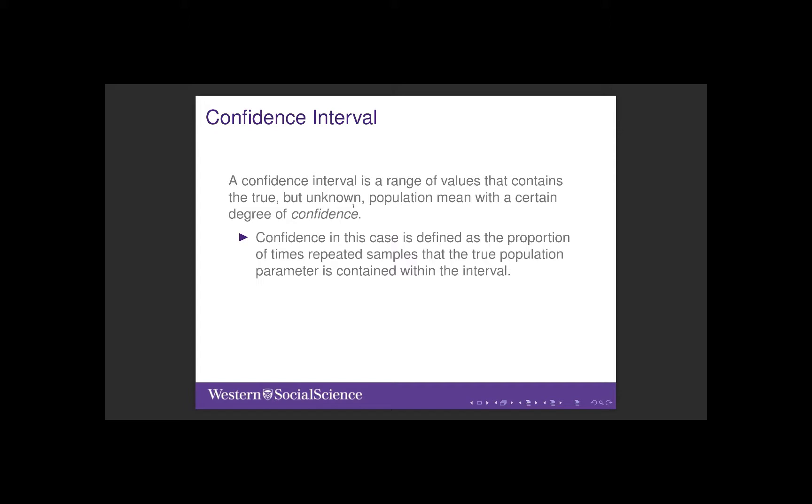Let's think back to our example from the last video, where we imagine being able to take a thousand samples of a thousand Canadians to survey their ages. From those, we would get a thousand sample means, and for each one we could calculate a confidence interval.